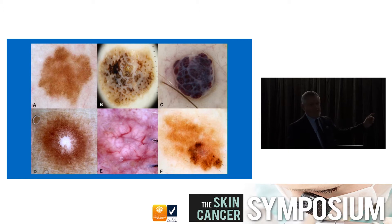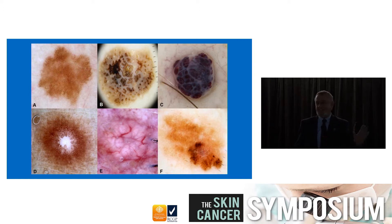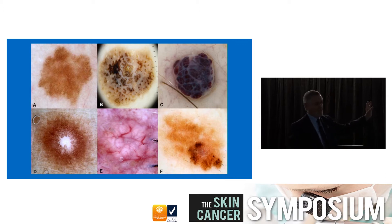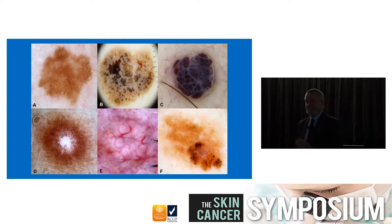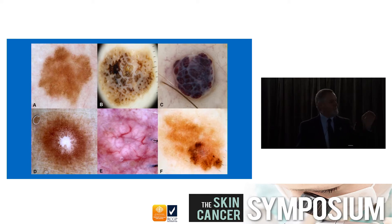When you look at a thousand lesions you'll know them, and you can look at a thousand easily next week on normal people because normal people have all five of those things. You don't need to put them through a system or an algorithm - you recognize them like you recognize your mother's face. That's 99.9% of the things you look at on the skin.